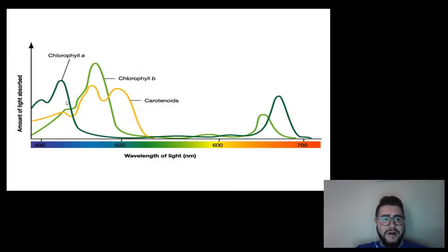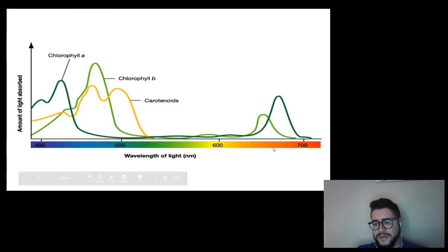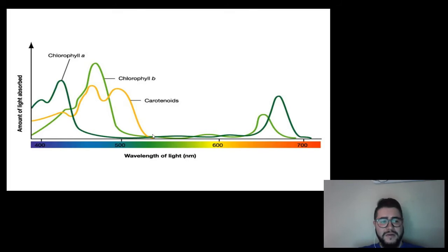You can see that in the graph here. They're absorbing the wavelengths in the 400-500 range, and then from the 650-700 range. But they're not absorbing this middle wavelength, which is for green light.